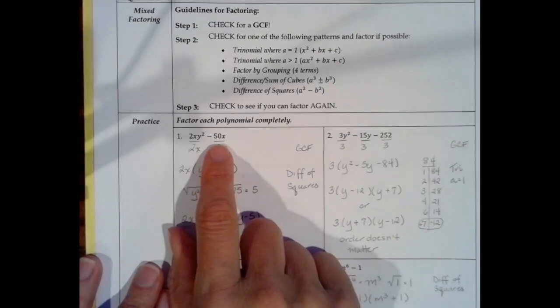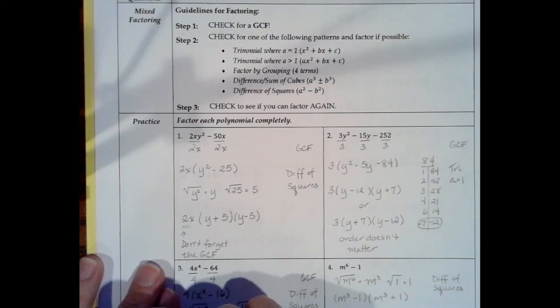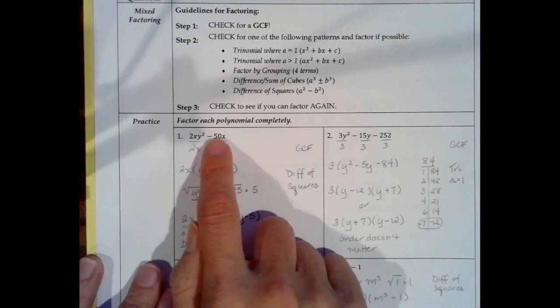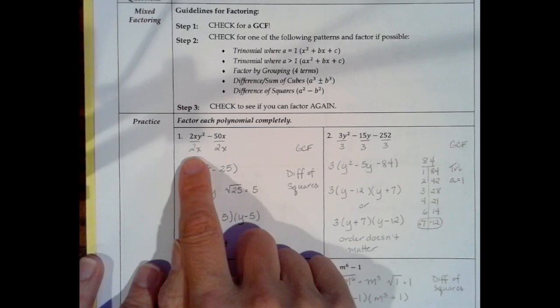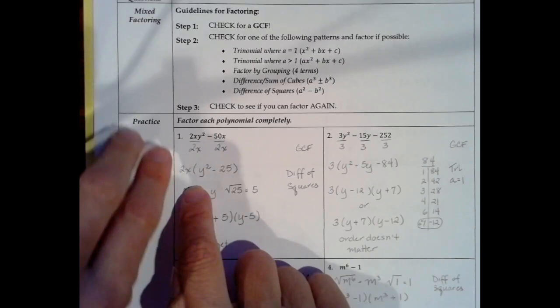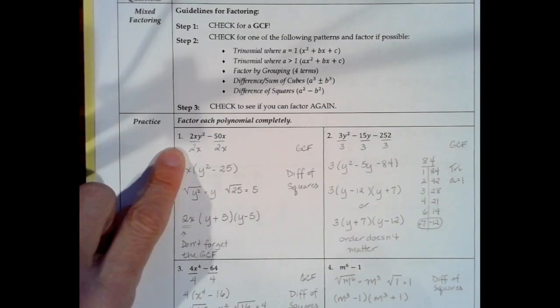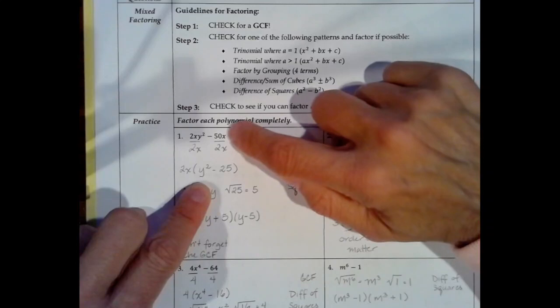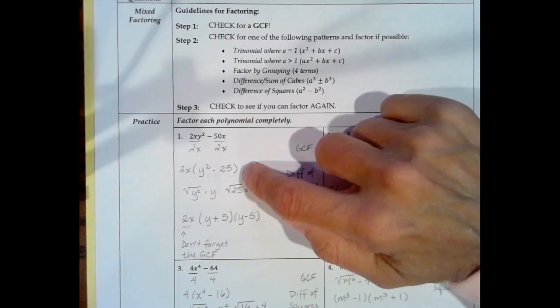The first one is 2xy² minus 50x. I'm looking at both terms and looking for a greatest common factor. It looks like we can factor out a 2, because 2 is the largest number that divides into 2 and 50, and they both have an x in common, so I can factor out an x as well. The GCF is 2x. I'm going to factor that out and put what's left in parentheses. 2 divided by 2 is 1, x goes into x once, leaving y². 50 divided by 2 is 25 and the x's cancel out, leaving y² minus 25 in parentheses.